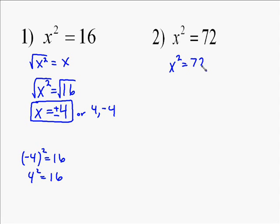The other problem, we take the square root of both sides. So the square root of x squared is x, that was easy, and the square root of 72.